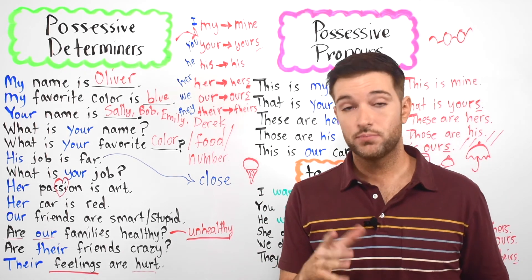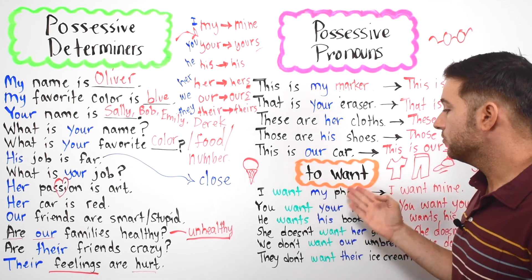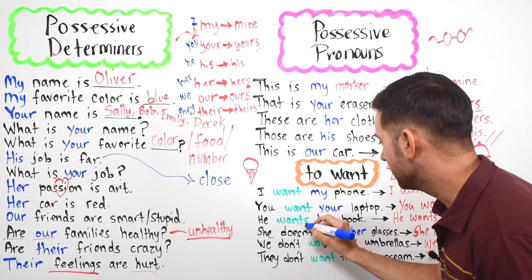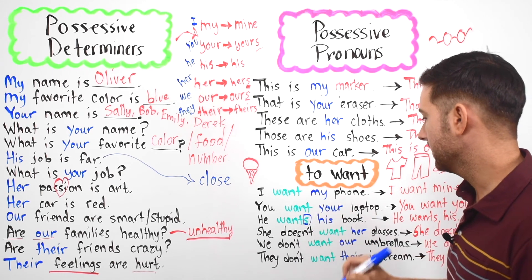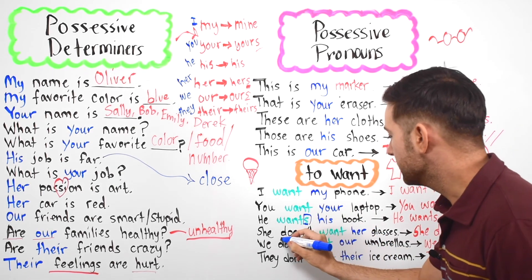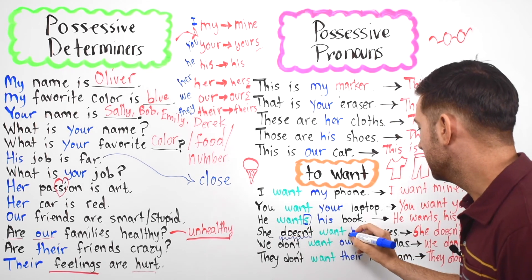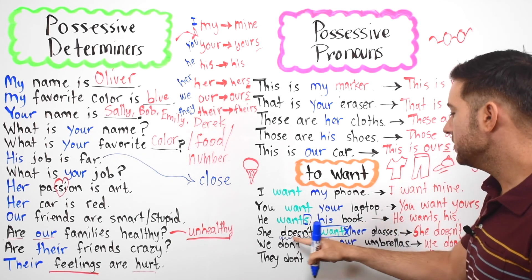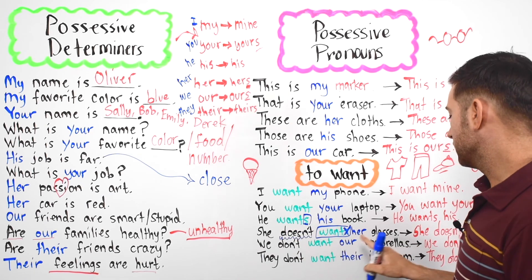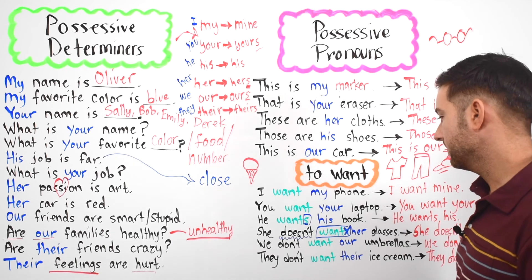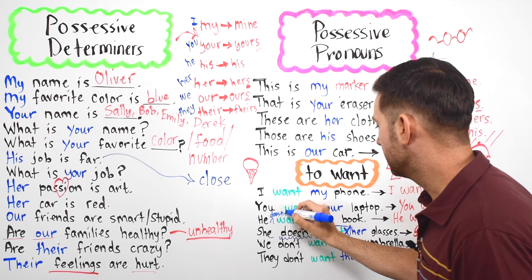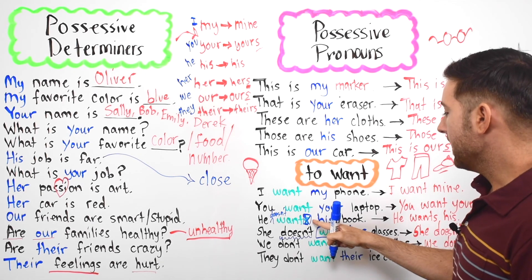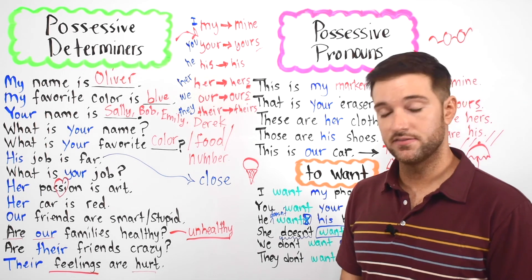I want to point out that there is a change in the verb 'to want' in the third person singular — he, she, it — wants with an S. However, when you have a negative, we do not add the S: she doesn't want, not she doesn't wants. So: she wants her glasses, but she doesn't want her glasses. The S only appears in the positive third person singular form.